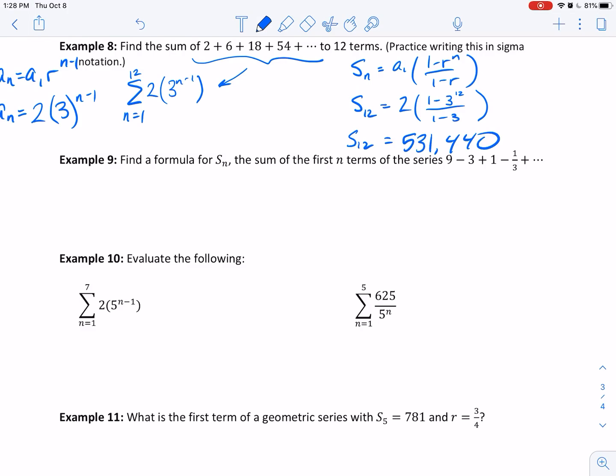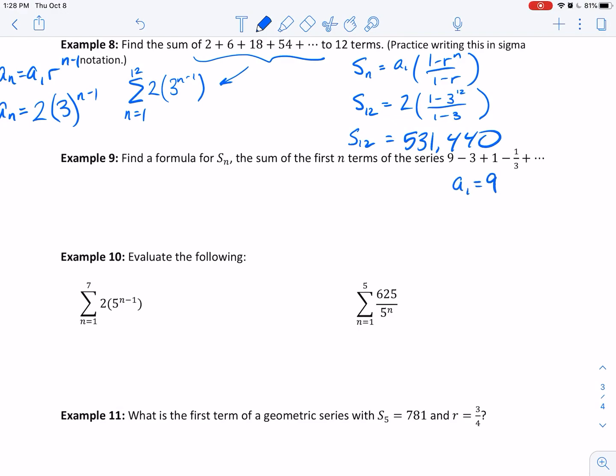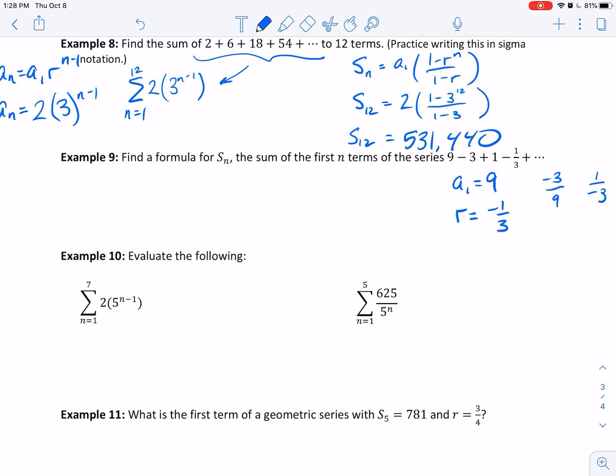Next one. Find a formula for S sub n, the sum of the first n terms of that series. What we need to do is recognize that our first term, a sub 1, is equal to 9. Our common ratio, notice if I took negative 3 divided by 9, or 1 divided by negative 3, my common ratio is negative 1 third.